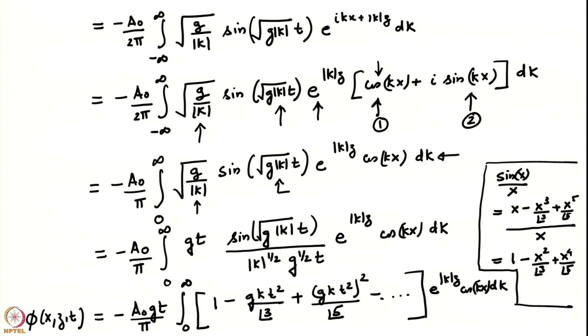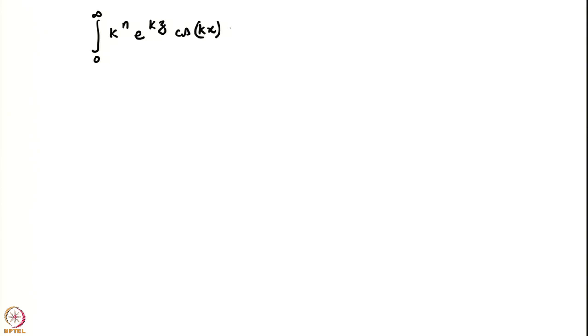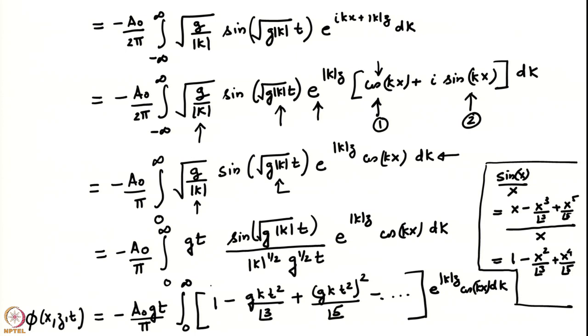We had the following expression for phi of x, z, t, expanded in a Taylor series for the term sin(sqrt(gk)*t) / sqrt(gk) * t. Each term in this infinite series has the form: integral from 0 to infinity of k^n * e^(kz) * cos(kx) dk. We are not retaining the modulus on k because the limit of integration has been changed from 0 to infinity. The first term has the structure k^0 * e^(kz) * cos(kx) dk, the second term k^1 * e^(kz) * cos(kx) dk, and so on.